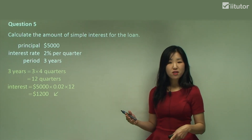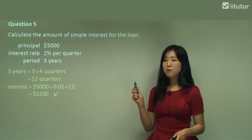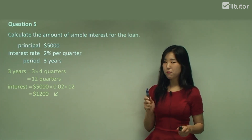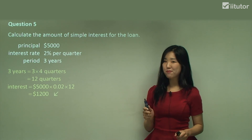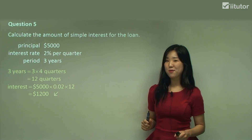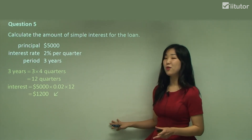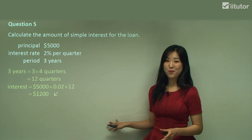We've covered a variety of questions with different unit conversions. The main challenge is the conversion step — make sure you get that right. Everything else comes down to applying the simple interest formula: Interest = Principal × Rate × Period.